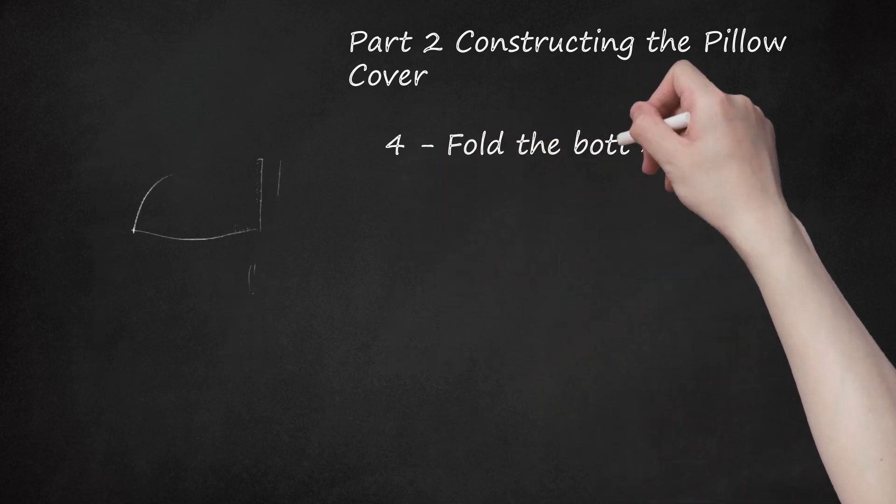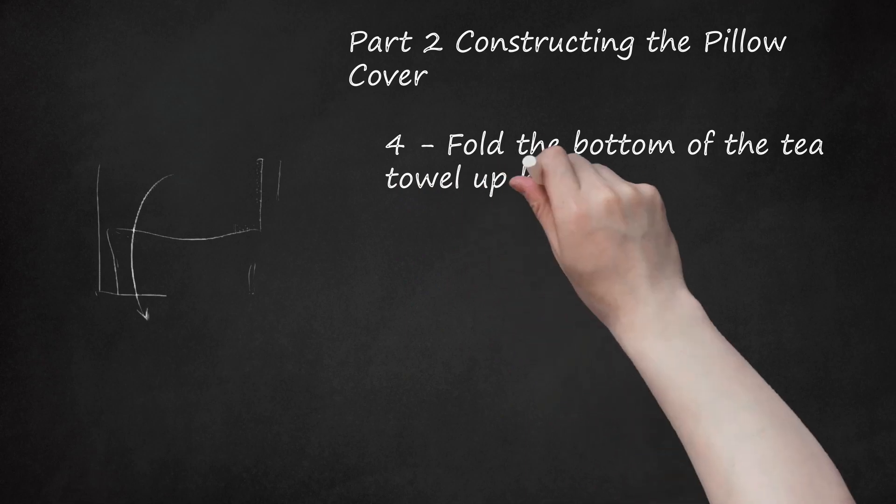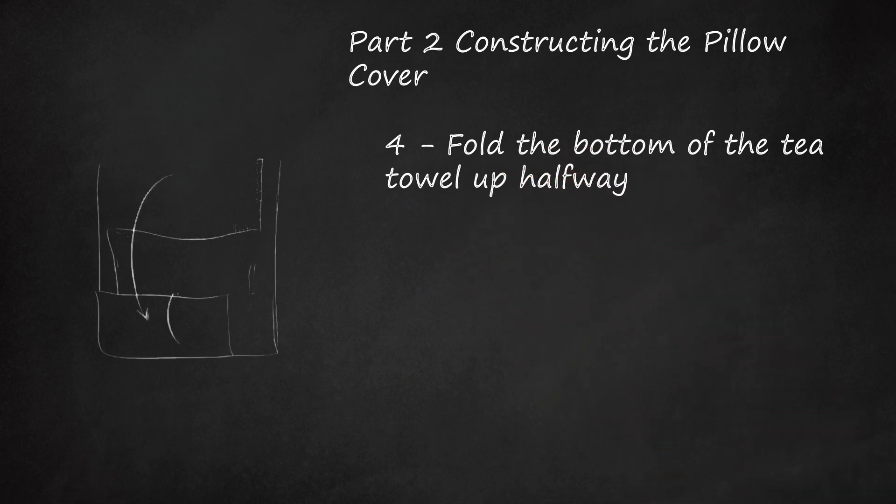Step 4: Fold the bottom of the tea towel up halfway. Fold the top of the tea towel down on top of it. You want it to be the exact height of your pillow form.